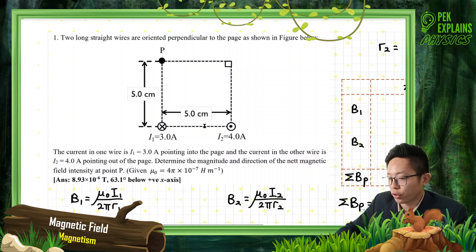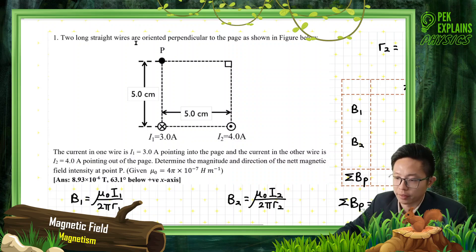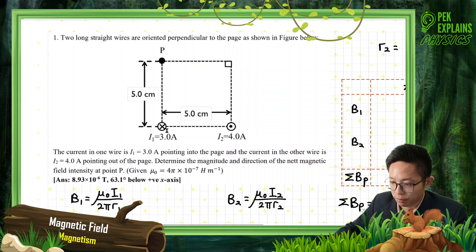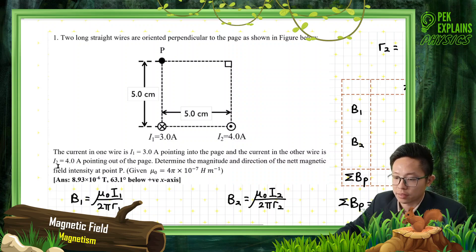We have two conductors here, I1 and I2 — 3 ampere and 4 ampere. The current in one wire is I1 equal to 3 ampere pointing into the page, and the current in the other wire is I2 equal to 4 ampere going out of the page.